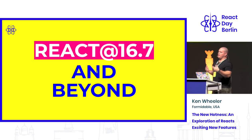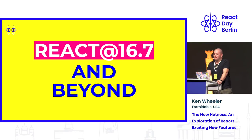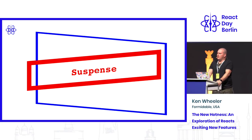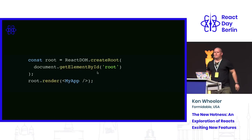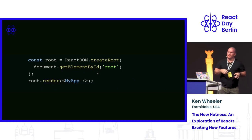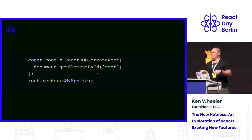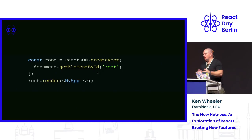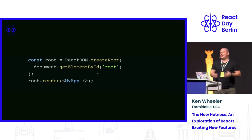Now we can talk about the crazy stuff that's in alpha — 16.7 and beyond, things you can play with today but maybe shouldn't ship to prod. First up: suspense. Suspense probably won't be ready for a little while, but you can play with it. They used to call it async mode, now it's concurrent mode — the terminology keeps changing. But that's what it's called right now.